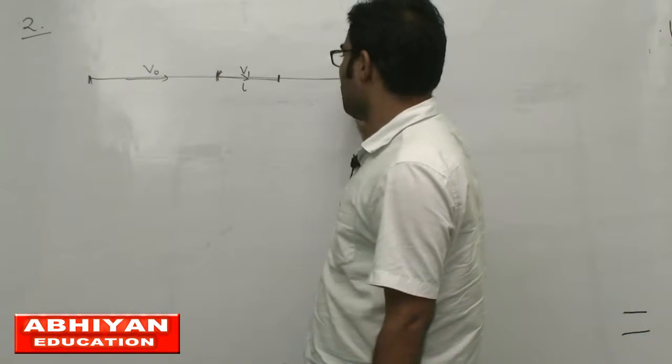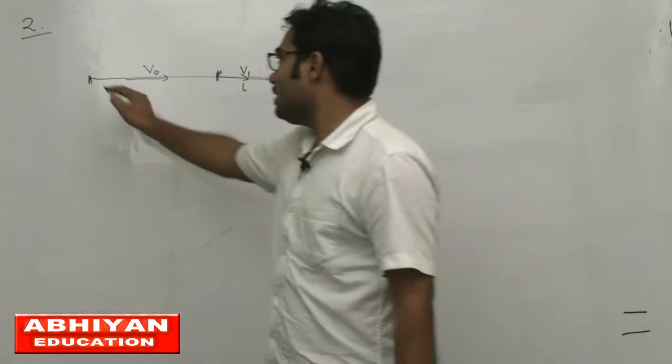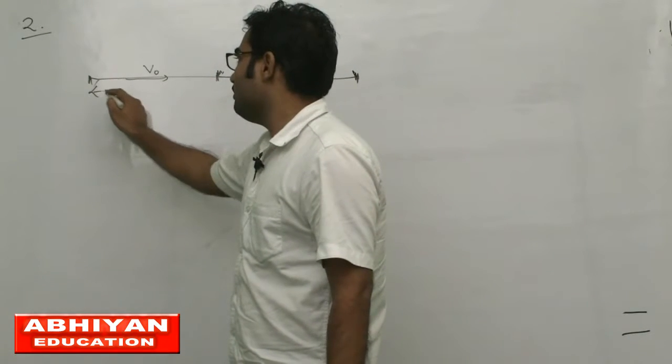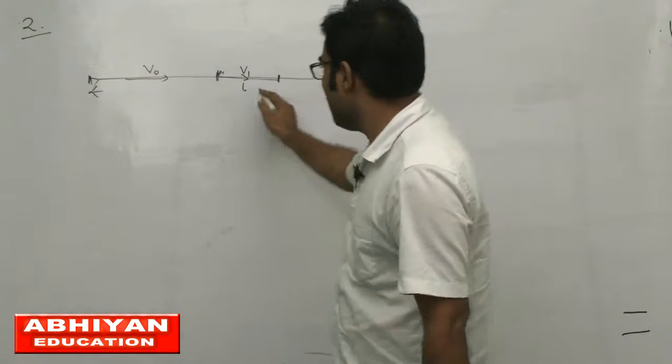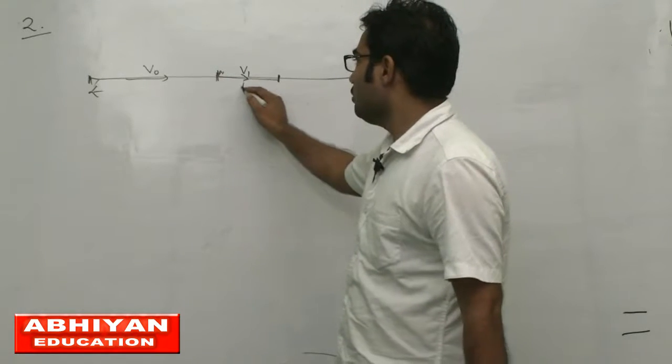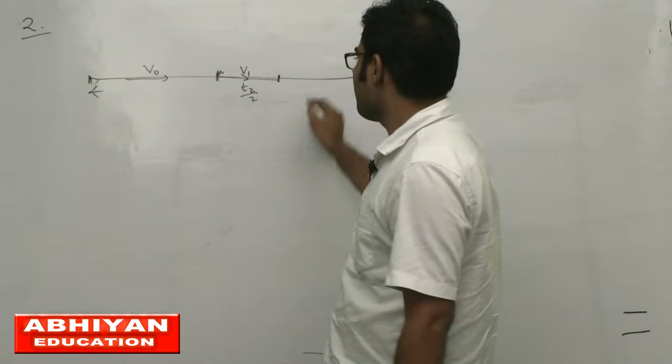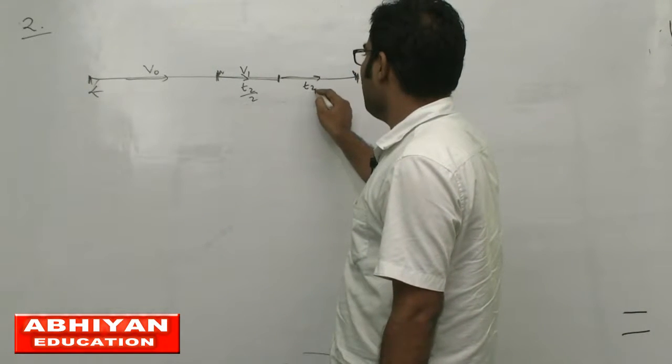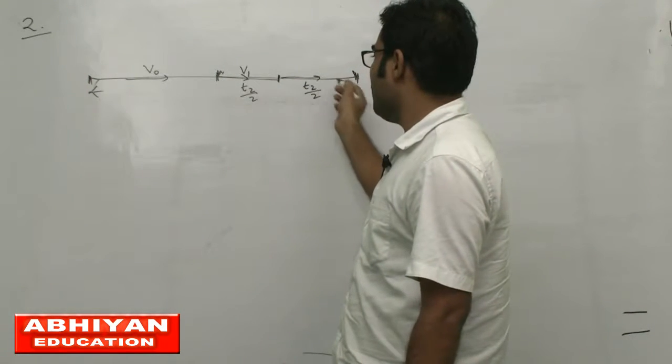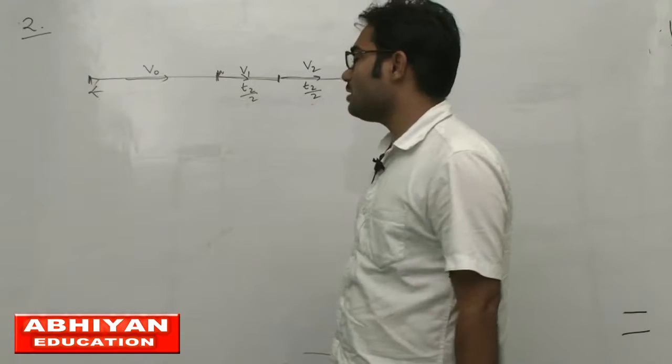Here to here the motion was for time t2. So t2 by 2 time, this is v1 velocity, and for t2 by 2, means half time interval, this is v2 velocity.